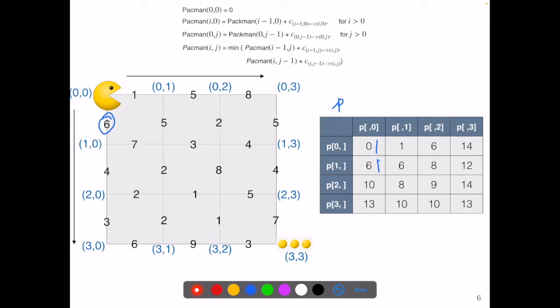And p(2,0) will be p(1,0) plus 4. That's 10. p(3,0) is p(2,0) plus the cost of 3. So that's 13.